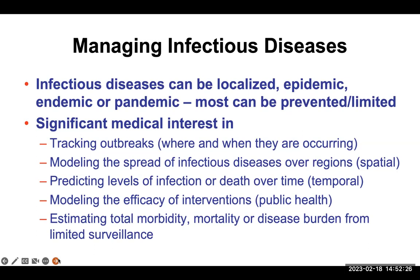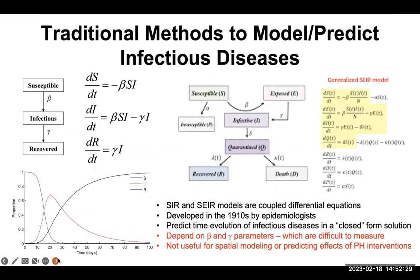Modeling for infectious diseases has been around for a long time. As far back as the early 1900s, epidemiologists developed equations called the SIR or SEIR models. S stands for susceptible, I stands for infectious, R stands for recovered, and the E in SEIR stands for exposed. These are differential equations — they're time-dependent and look at the evolution of susceptibility, infectivity, exposure, and recovery. They predict time evolution.